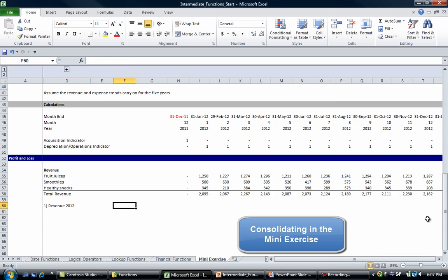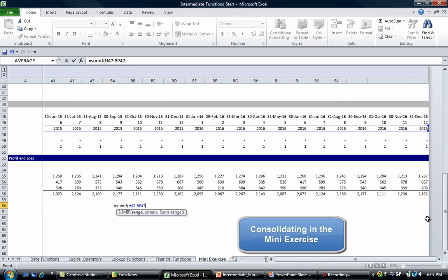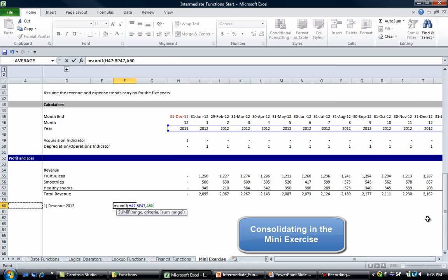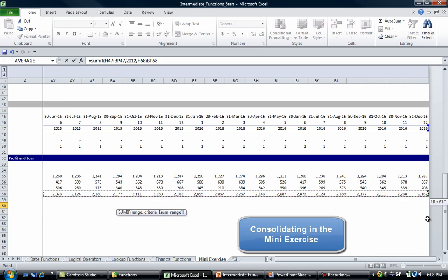Let's go equals SUMIF, range so our range are our years, comma. I don't want to lock any of those cells. Now criteria, we know it's 2012 we're looking for. We don't have to put equals or anything like that, default is equals, and we want to sum that range.